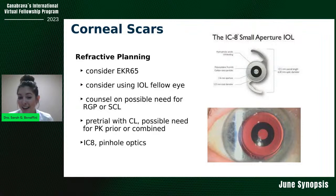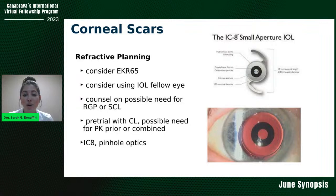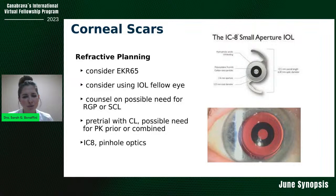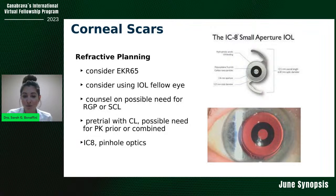Excitingly, at least in the United States, the IC8 — a small aperture IOL — was just released. It works through pinhole optics and is used for very irregular corneas. This is really exciting for some of our patients with irregular corneas. Some people use it for presbyopia, but the IC8 can be really helpful for patients who don't have great options. That leads us into keratoconus — one of the most common things we see in the cornea clinic.